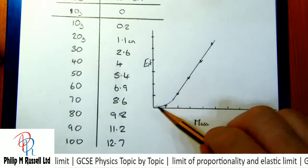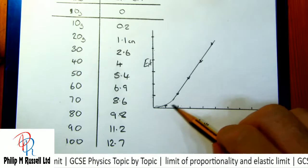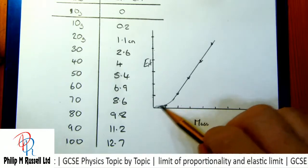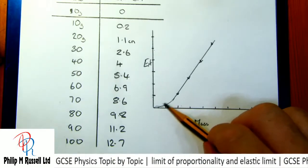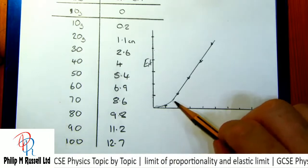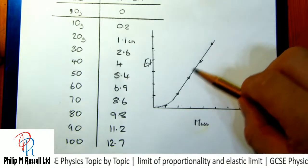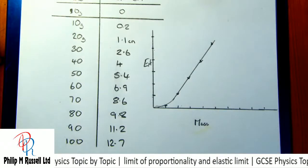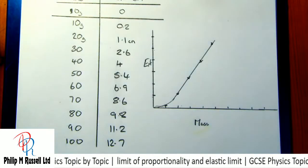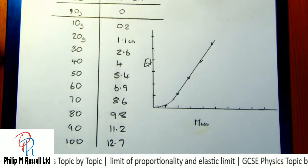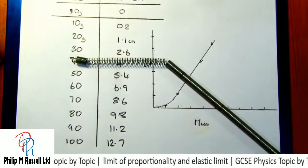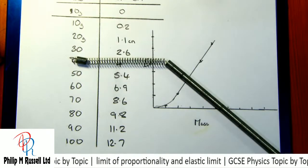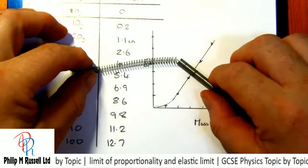And I'm going to plot just a little bit of this, just to give you a quick idea of what we've got. This is not a proper graph, this is just a quick bit. So we've got 0, 0. This is 0.2. So that's my extension at that mass. At 20 we've got 1.1, we've got 2.6, we've got 4, we've got 5.4. It's going to go off the limit, but we can see that we've got here a straight line.